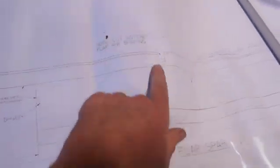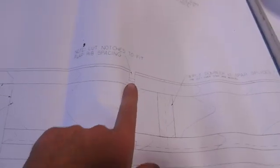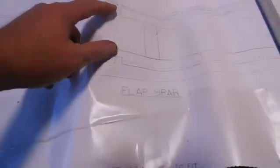I don't know, do I have a detail on here? Yeah, right here. So here's the spar. There's a detail of how the notched out for each rib, top and bottom.